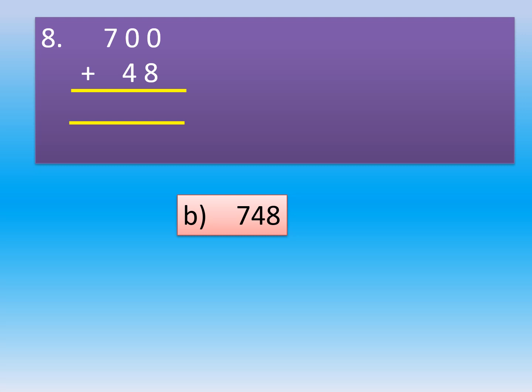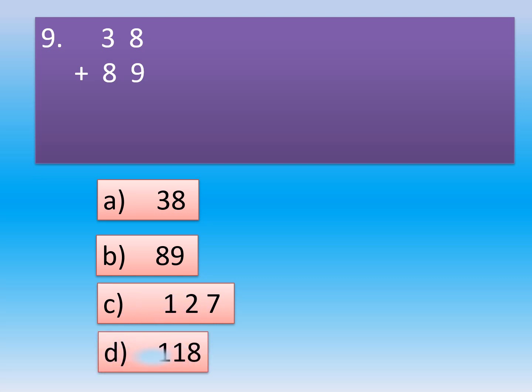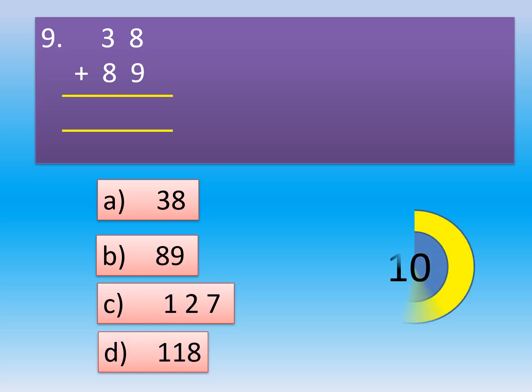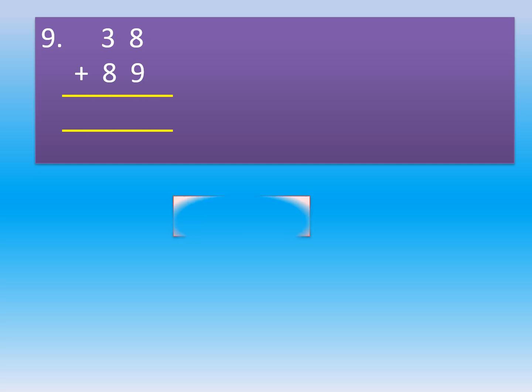Question 9: 38 plus 89 is equal to dash — 38, 89, 127, or 118. The correct option is Option C, 127.